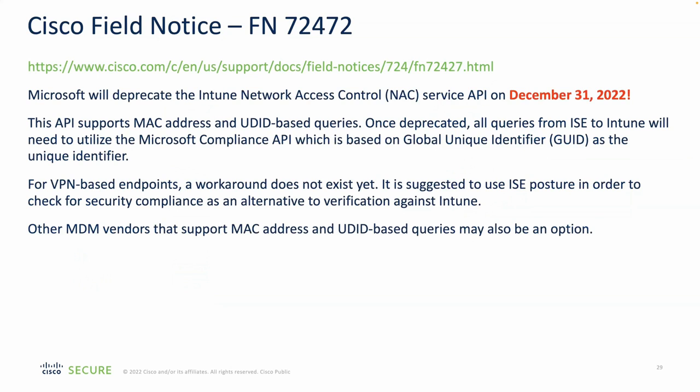An important note: a Cisco field notice was released stating that Microsoft is deprecating the old MAC-based API (MDM API v2 and earlier) at the end of this year. Once deprecated, ISE will no longer be able to use MAC addresses for compliance checks against Intune. For VPN endpoints, a workaround does not yet exist because the VPN headend terminates the certificate before ISE can see it. The current suggestion is to use ISE posture or other MDM vendors that still support MAC or UDID-based queries.